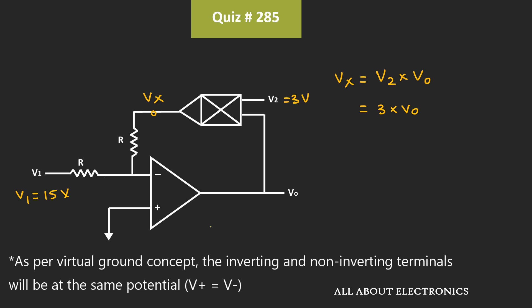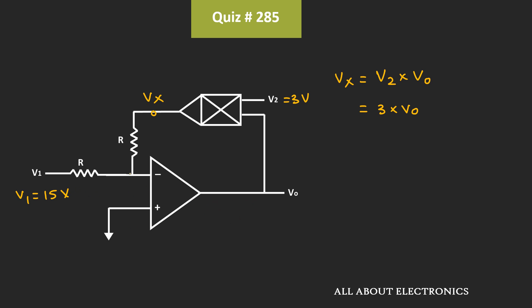So to find this voltage Vout, let's apply the KCL equation at this node. The current flowing through this resistor is equal to I1, while the current flowing through this resistor is equal to I2. So when we apply KCL at this node, we can write I1 equals I2.